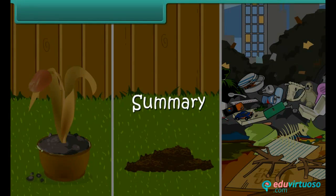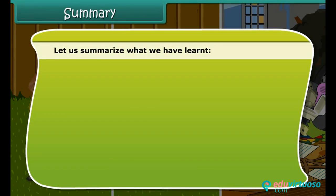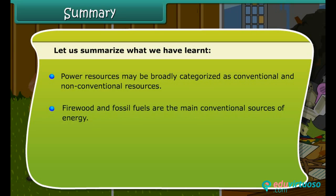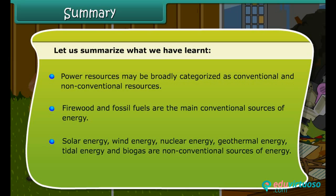Let us summarize what we have learned. Power resources may be broadly categorized as conventional and non-conventional resources. Firewood and fossil fuels are the main conventional sources of energy. Solar energy, wind energy, nuclear energy, geothermal energy, tidal energy, and biogas are the non-conventional sources of energy.